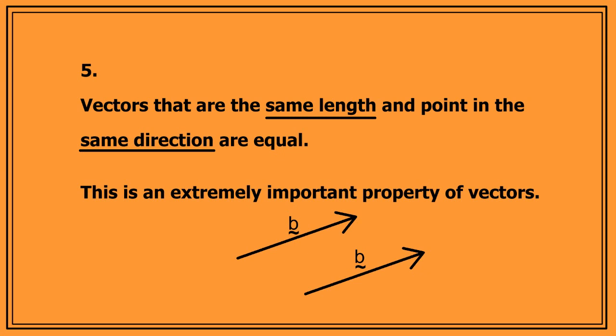Number five, vectors that are the same length and point in the same direction are equal. Now, this will turn out to be an extremely useful idea later.